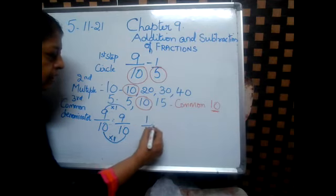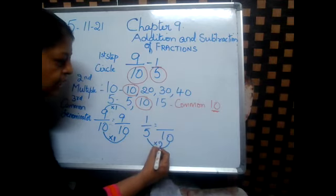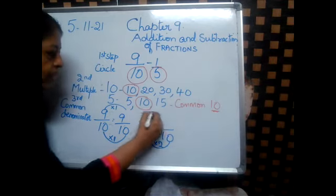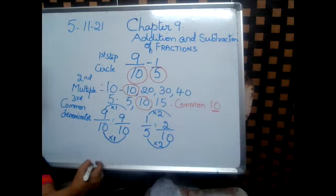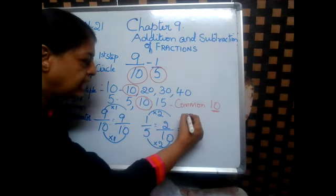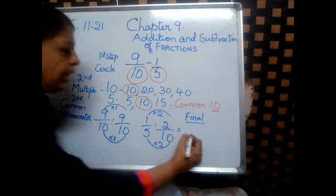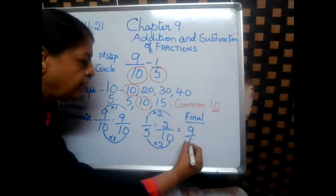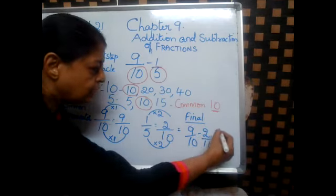1 by 5 — the common denominator is 10. 5 twos are 10, so 2 times. Multiply the top by 2: you will get 2. 5 into 2 is 10, and 2 times 1 is 2. Now we have to do the subtraction — this is the fourth final solving step. So, 9 by 10 minus 2 by 10. Because they are common, we can easily subtract: that is equal to 7 by 10.